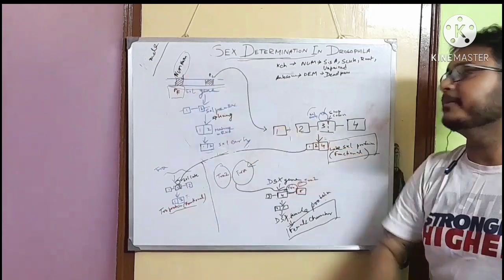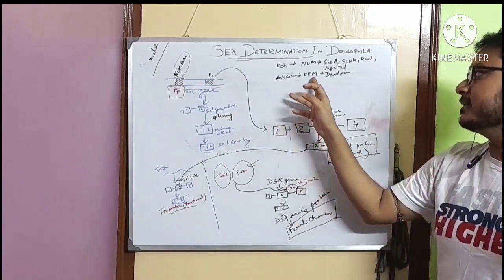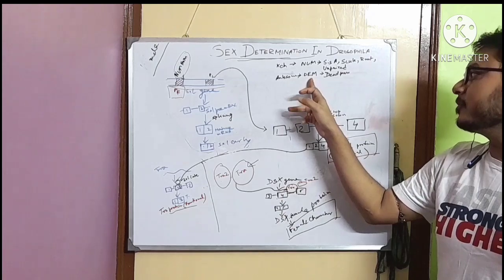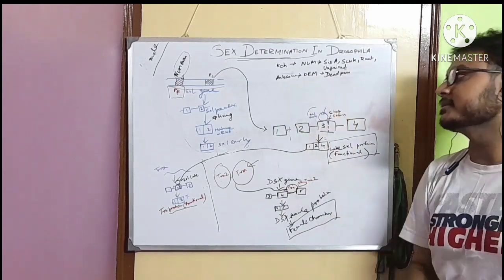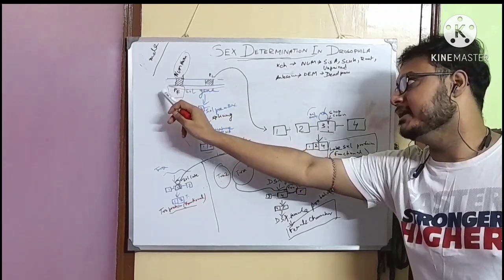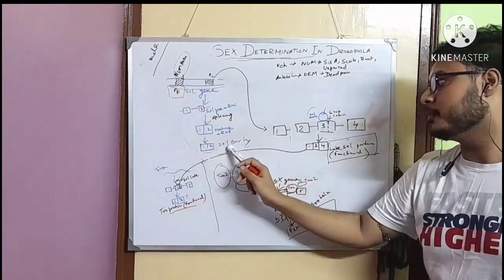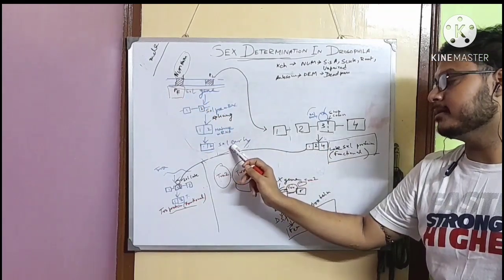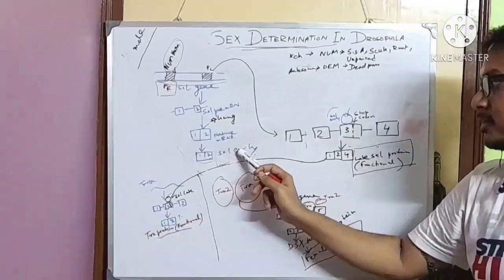Numerator complex is not present. There, either denominator complex or numerator-denominator complexes are present. So, as the promoter early is not present, early SXL protein will not be produced.